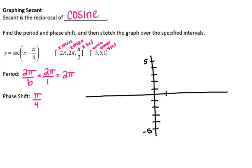The tick marks are at π/2, 2π/2 which is π, 3π/2, and 4π/2 which is 2π. Going in the other direction: negative π/2, negative π, negative 3π/2, negative 2π.